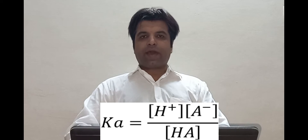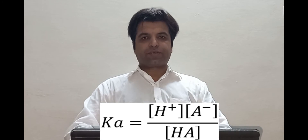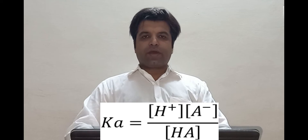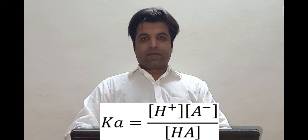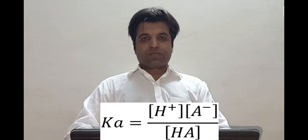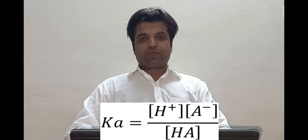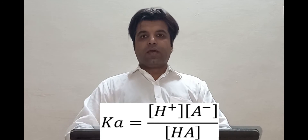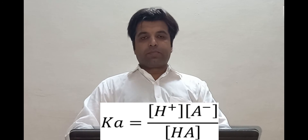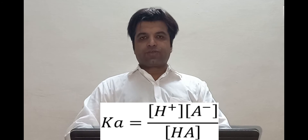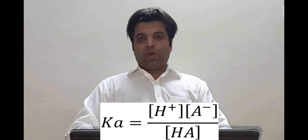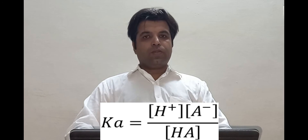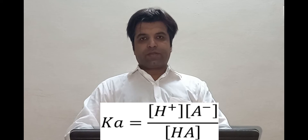When we talk about strong acids at high concentration, strong acids are dissociated completely. Which means that in the equation HA leads to H⁺ plus A⁻, HA would be completely dissociated into the hydrogen ion and its conjugate base, which means that no HA will be left in the solution.